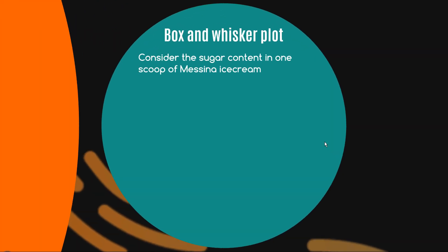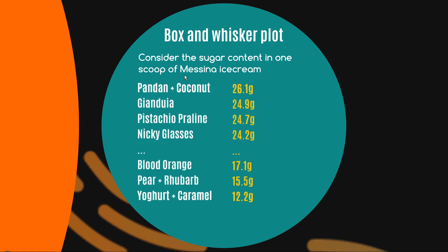There are different applications for each of these — sometimes you just want the range, the maximum minus the minimum, but other times you want to avoid this outlier problem. Now let's have a look at the box and whisker plot. The inspiration for this example is my increasing addiction to Messina ice cream, which is just up the road from my place — dangerously, I should say. Here are all of the flavors from Messina.